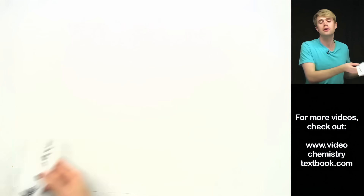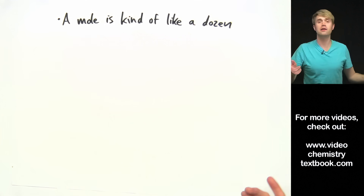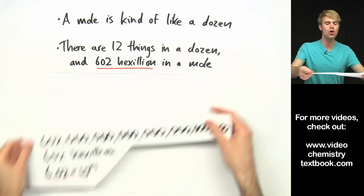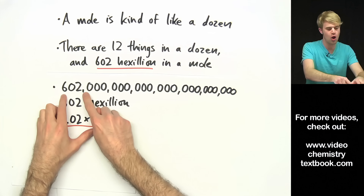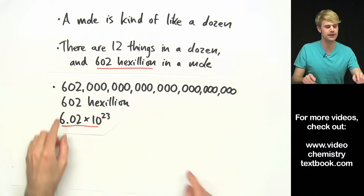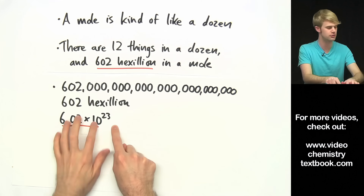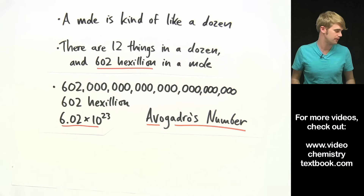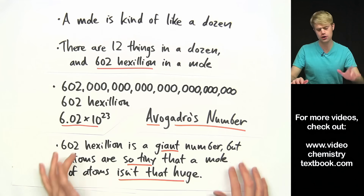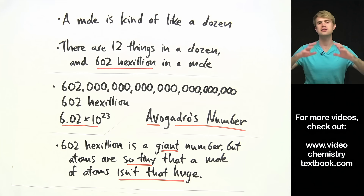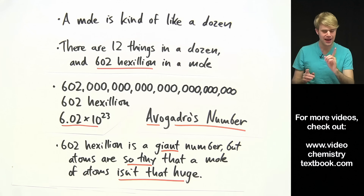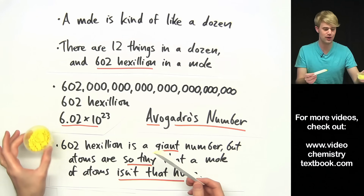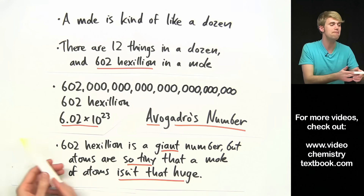To review: a mole is kind of like a dozen, except there are 12 things in a dozen and 602 hexillion things in a mole. We can write this number as 602 with 21 zeros, call it 602 hexillion, or most commonly abbreviate it in scientific notation as 6.02 times 10 to the 23rd. This number is often referred to as Avogadro's number. And while 602 hexillion jelly beans would be the size of planet Earth, atoms are so tiny that a mole of sulfur atoms is a pretty manageable size. That is an introduction to moles.